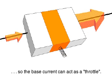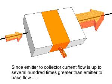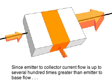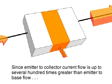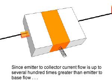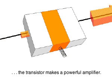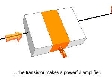Like a throttle controlling the speed of an engine. Because the emitter to collector current flow is up to several hundred times greater than the emitter to base current, the transistor makes a powerful amplifier.